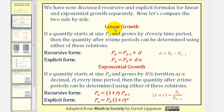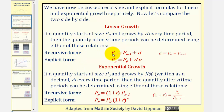For linear growth, if a quantity starts at size p sub zero and grows by d units every time period, then the quantity after n time periods can be determined using either of these two equations here. We have a recursive equation and an explicit equation. For the recursive equation, notice that p sub n is based upon the previous population of p sub n minus one. So the recursive equation for linear growth is p sub n equals p sub n minus one plus d, where d is our common difference. We can use this formula here to find d if needed.